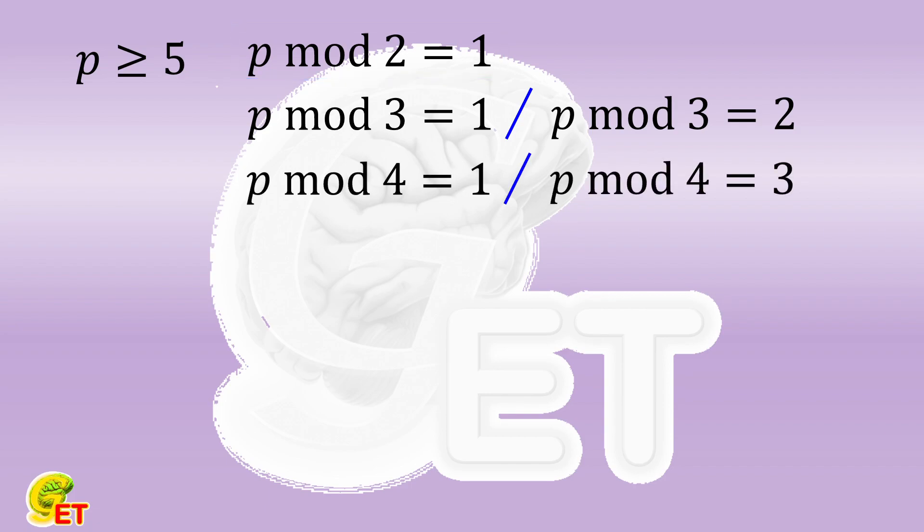What prime factors does 24 have? It equals 2 times 2 times 2 and then times 3. Regarding the square of p minus 1, it is equal to p plus 1 times p minus 1.